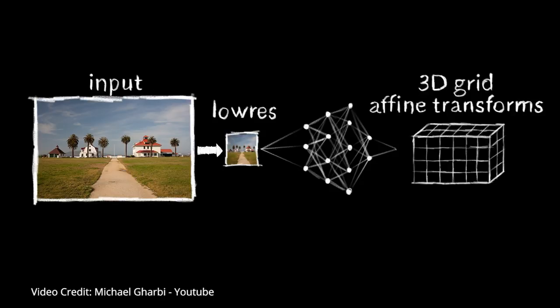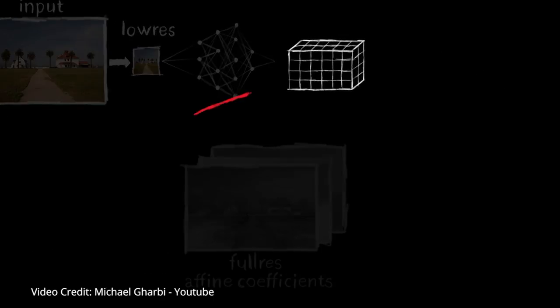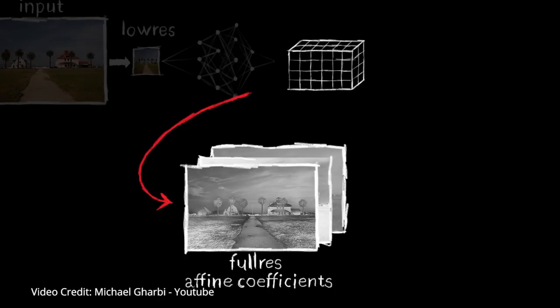The researchers trained neural networks using a data set of 5000 images created by Adobe and MIT. Each image included in this collection was retouched by 5 different photographers and this data was used to teach the algorithm how photos are typically edited.